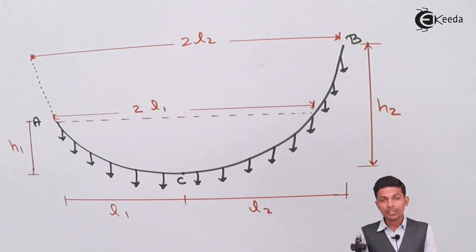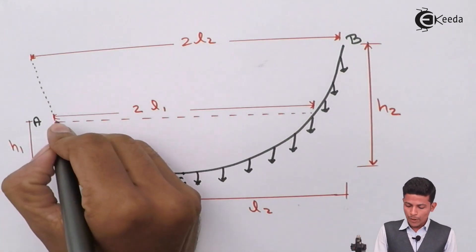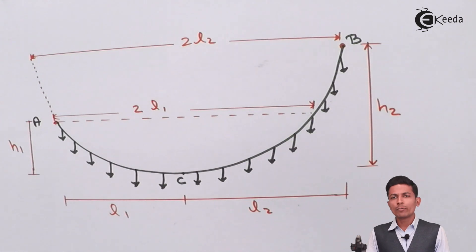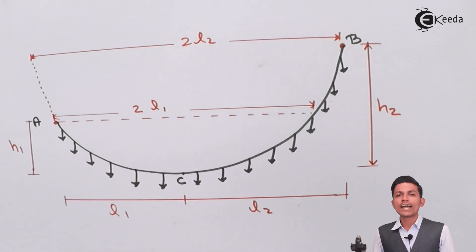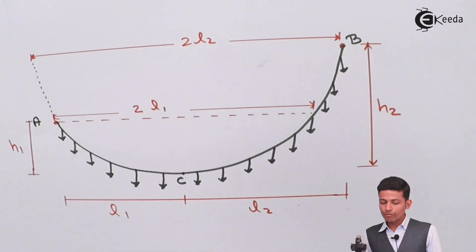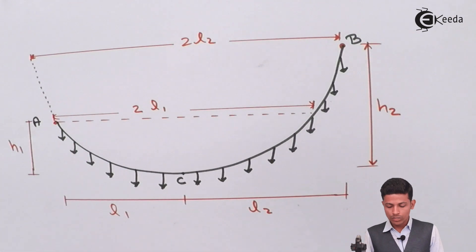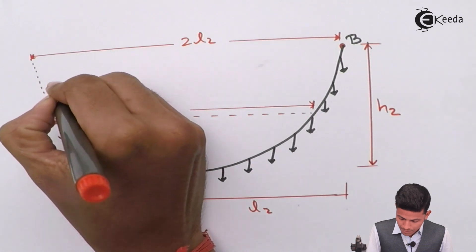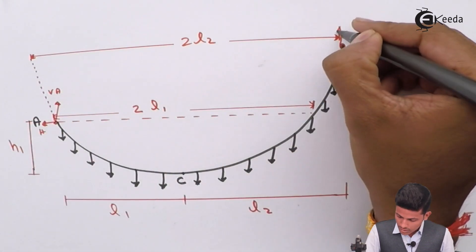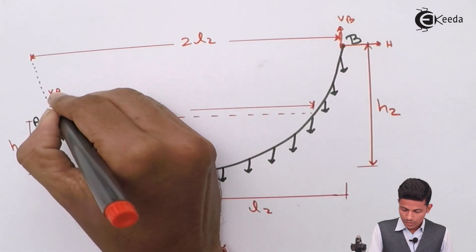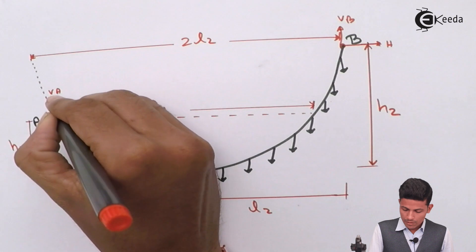In this type, at points A and B you have to find the reactions VA and H. In this type, we cannot directly take the moment. We have to use the direct formula to find the reactions. If we have to find VA, suppose this is VA, this is H, this is VB, and this is H.